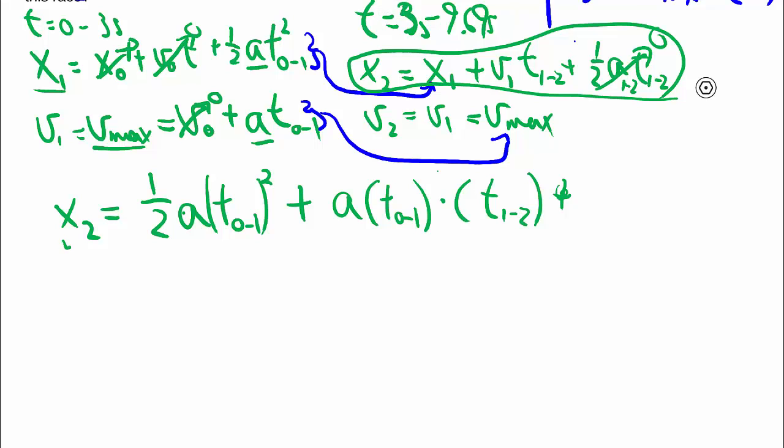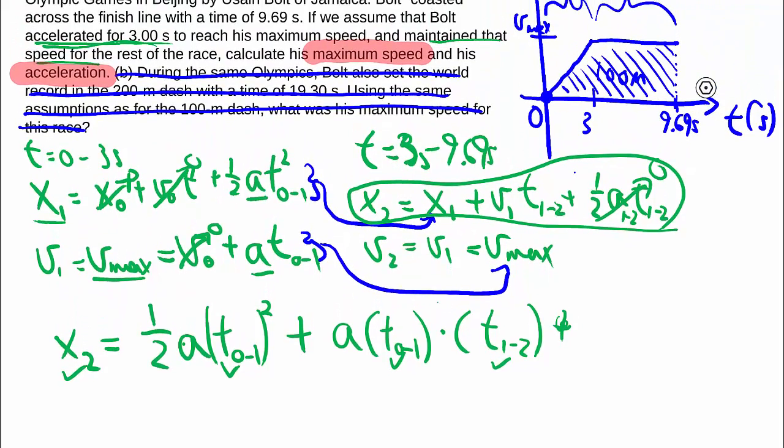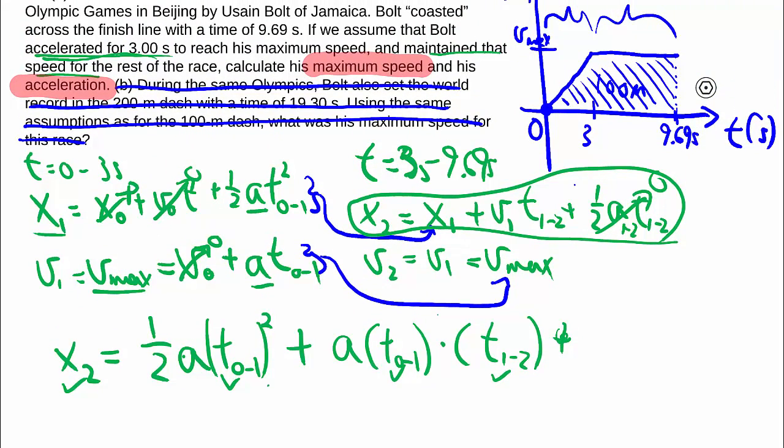Out of this expression, we know this, we know that, we know that, and we know that. So the only unknown we have is a, which makes it simple to solve. And for those of you who know this, the first chunk here would be the area of this triangle, whereas this chunk is this height times this time, so overall the two separate sections of the area add up to give you the overall displacement.